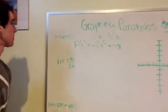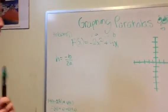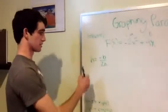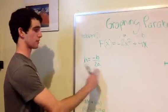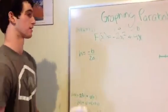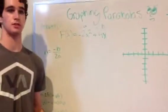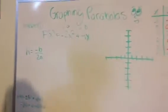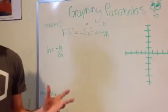Today the problem that we got is not a parabola in standard form, so we're going to be using the equation h equals negative b over 2a to be getting our x value. The first thing you want to do while graphing a parabola is identify your a and b value.